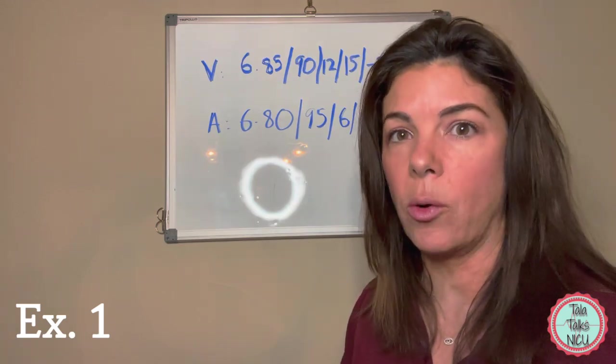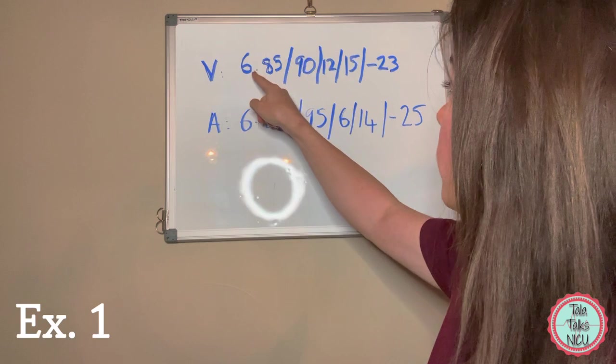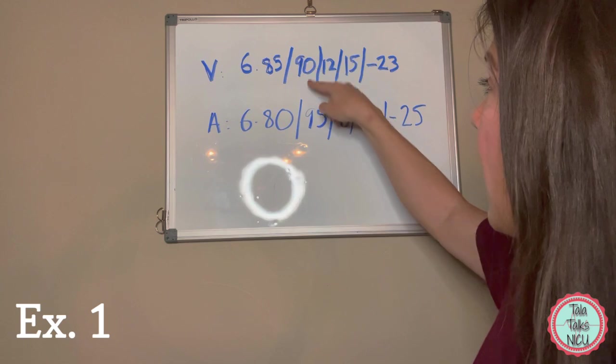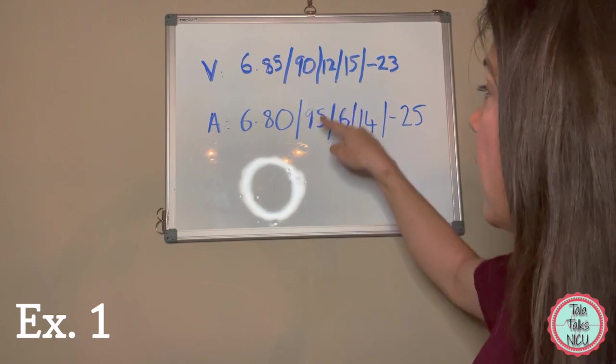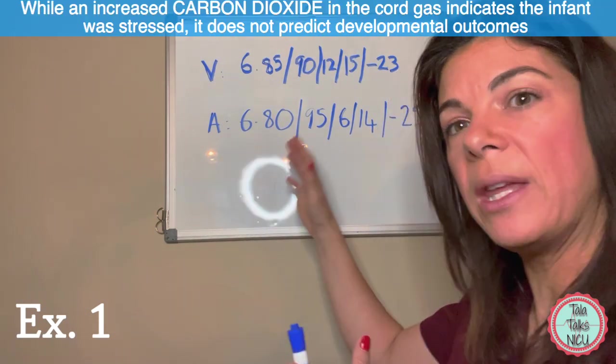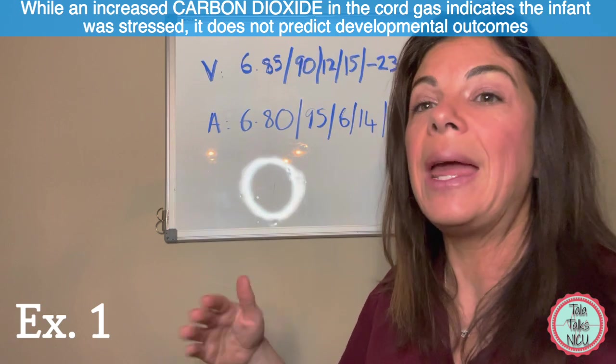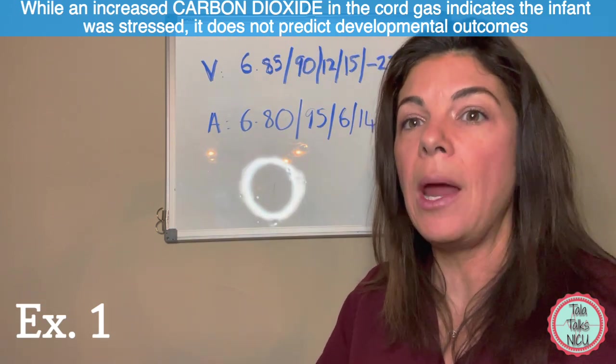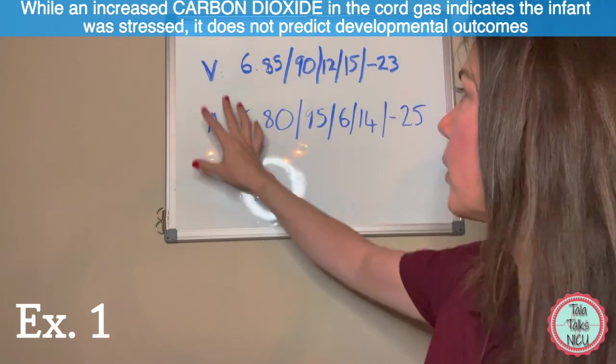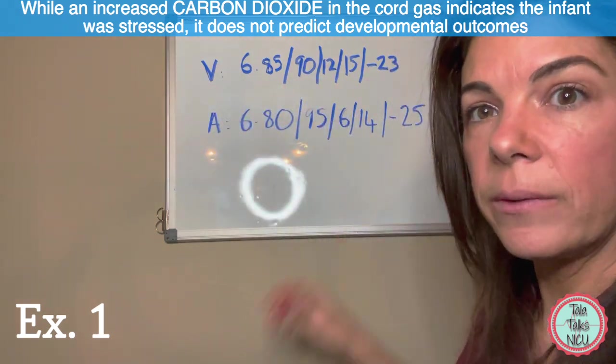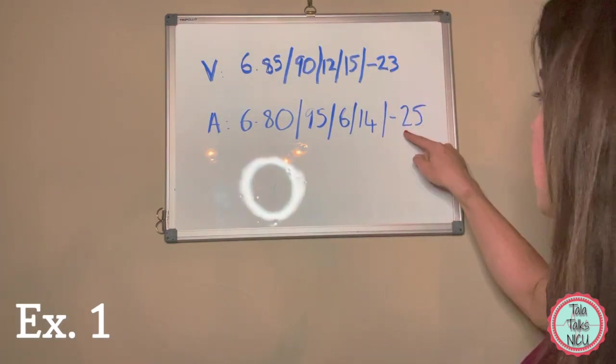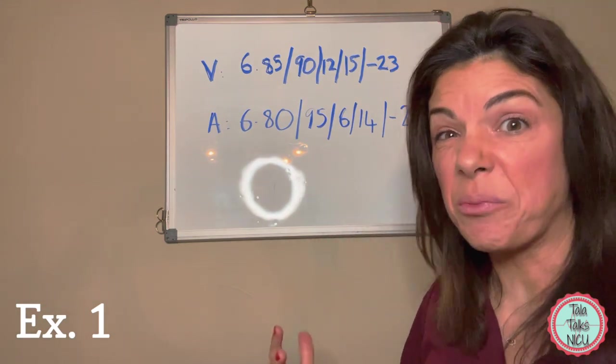As you've both seen, they're obviously both very acidotic. 6.85 and 6.8 is much lower than the 7.1 cutoff for acidosis, and really less than 7 if we're strongly considering cooling. This is true of both the vein and the artery. We also have some respiratory acidosis with a CO2 of 90 and 95. Even though this shows that the baby was probably under stress, it doesn't really predict any developmental outcomes. Generally when we're looking at gases, we're just looking at the pH and the base.